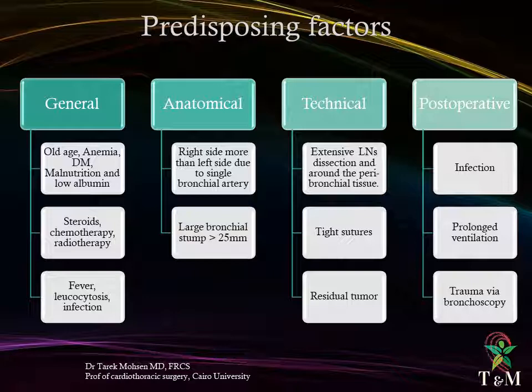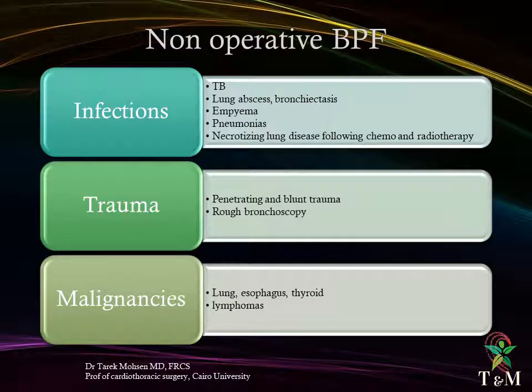Anatomical causes include right side more than left side due to single bronchial artery supply, and a large bronchial stump greater than 25 millimeters. Technical errors include extensive dissection around the peribronchial tissue, tight sutures, and residual tumor. Post-operative infection along with ventilation and trauma via bronchoscope can also predispose to bronchopleural fistula.